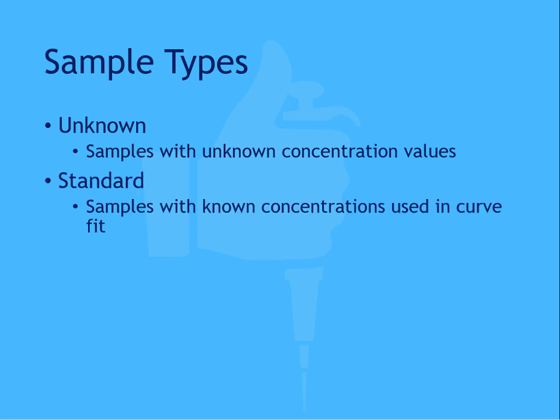Standard samples are used as calibrators for curve fitting. These samples have known concentrations and are used as the ruler for your assay. By using these known values for the standards, the concentration values of your control and unknown samples can be interpolated by fitting a curve to the plotted raw values of your standards.